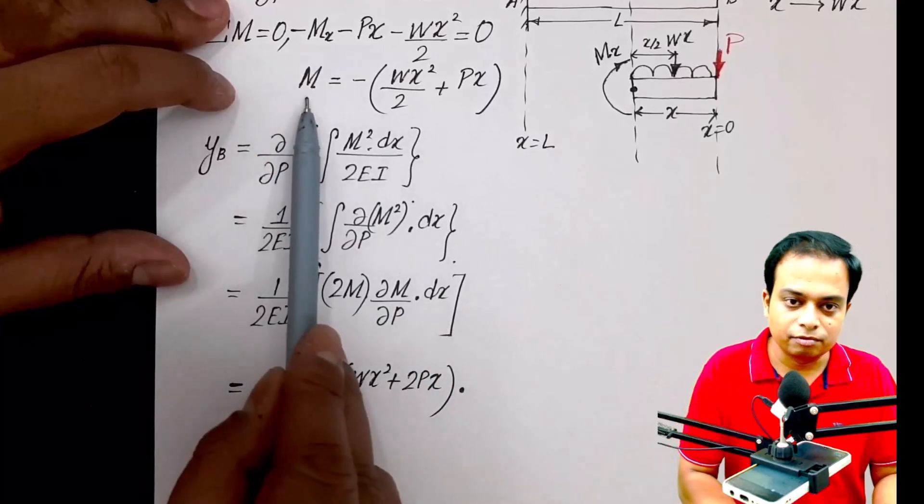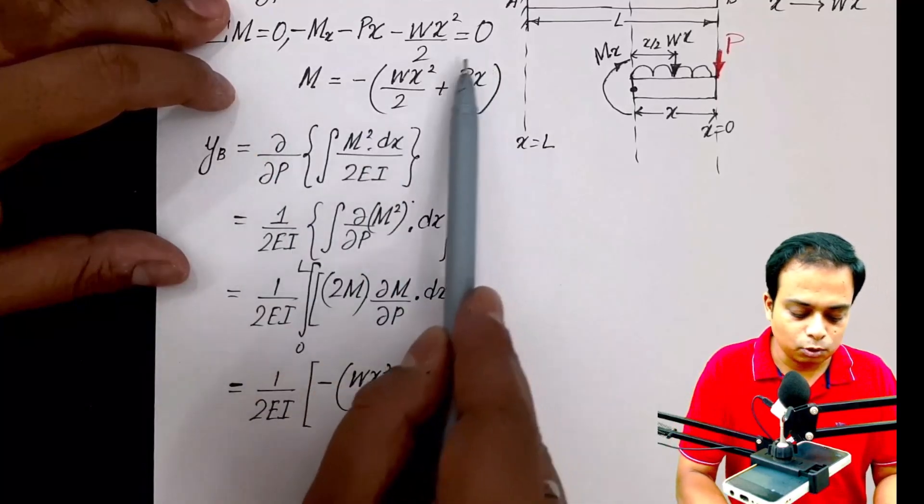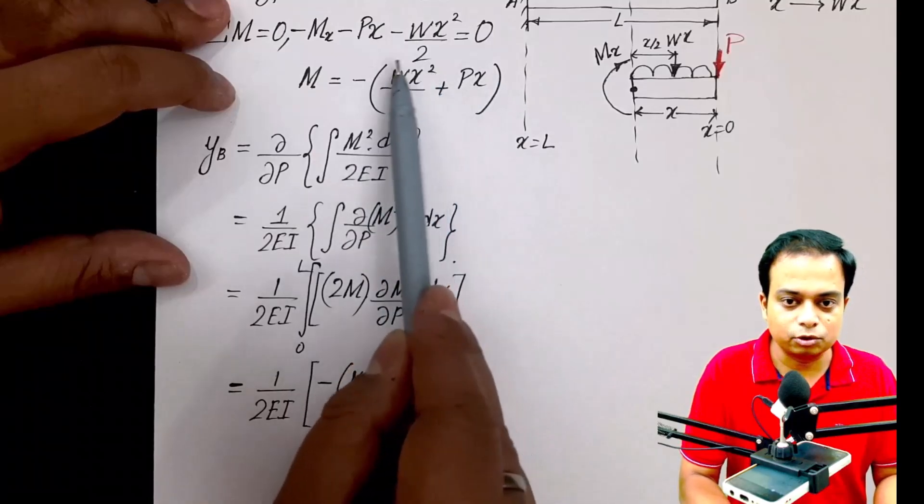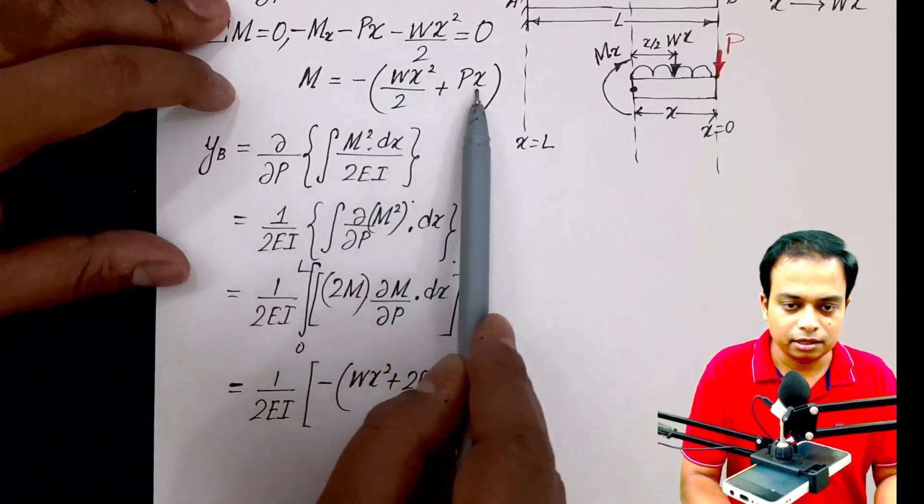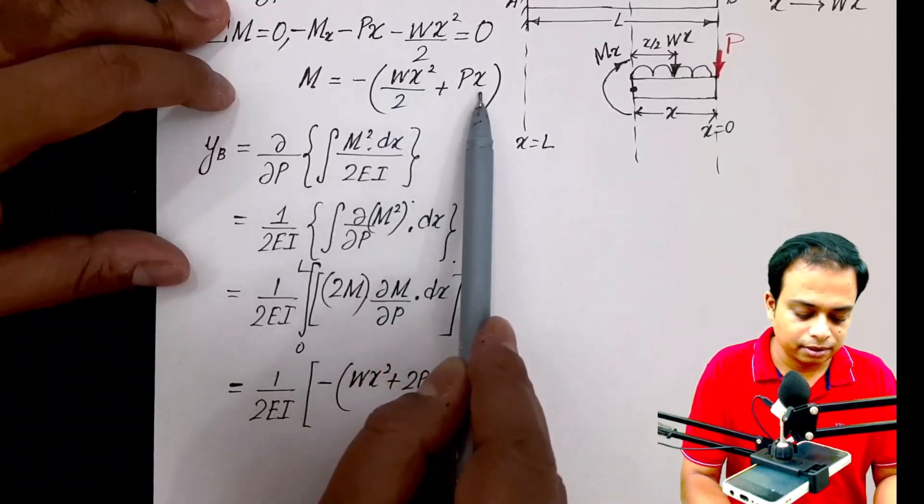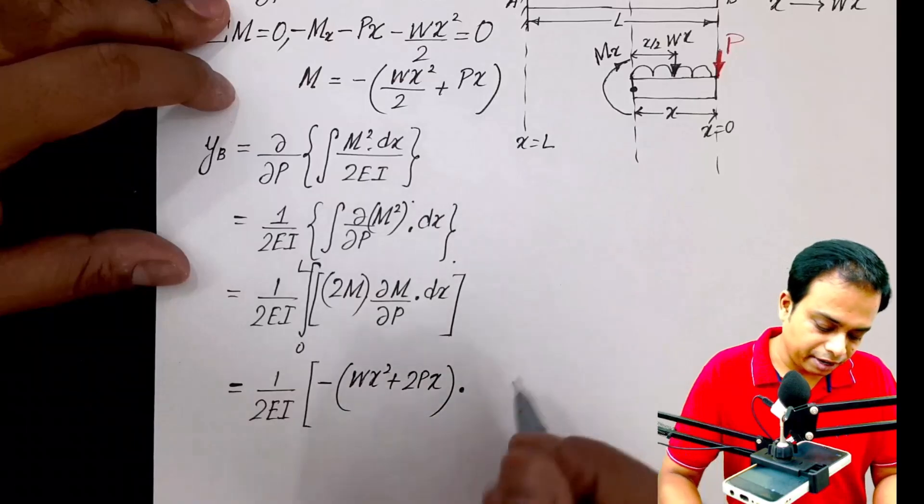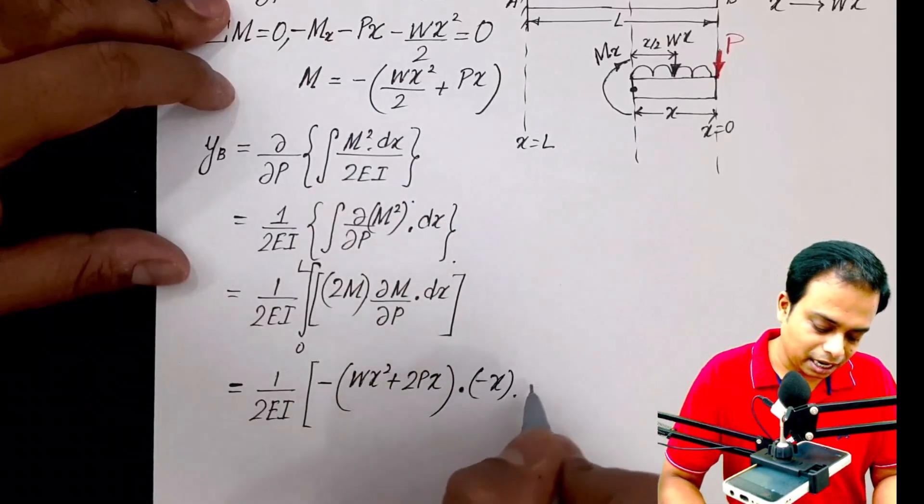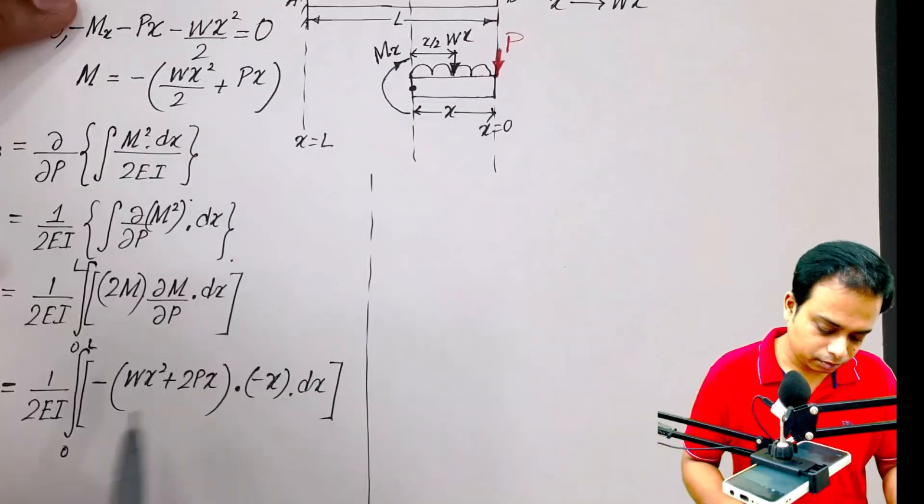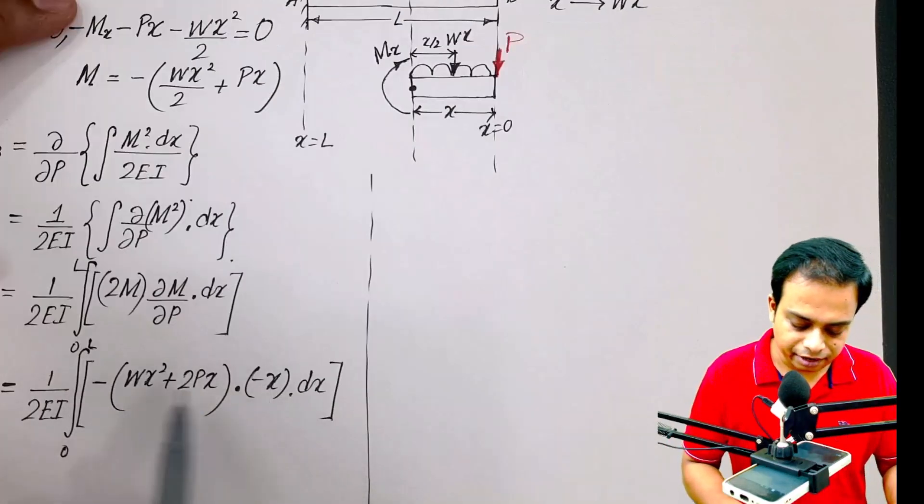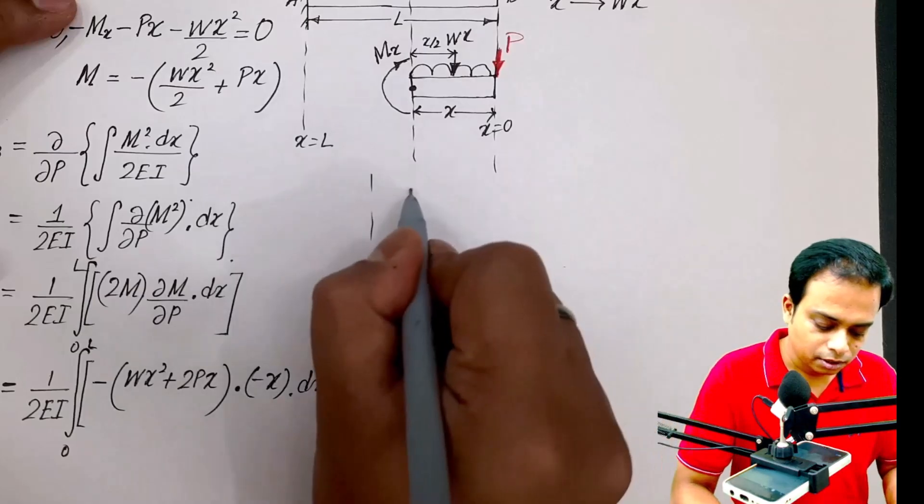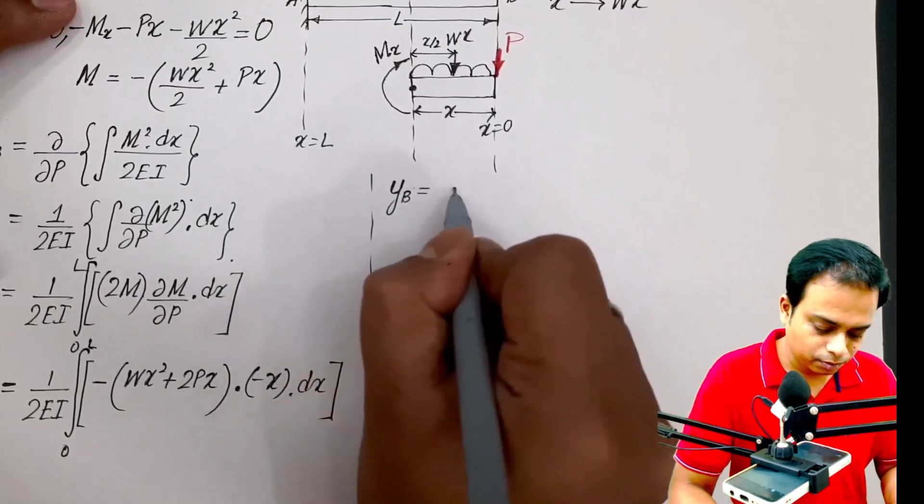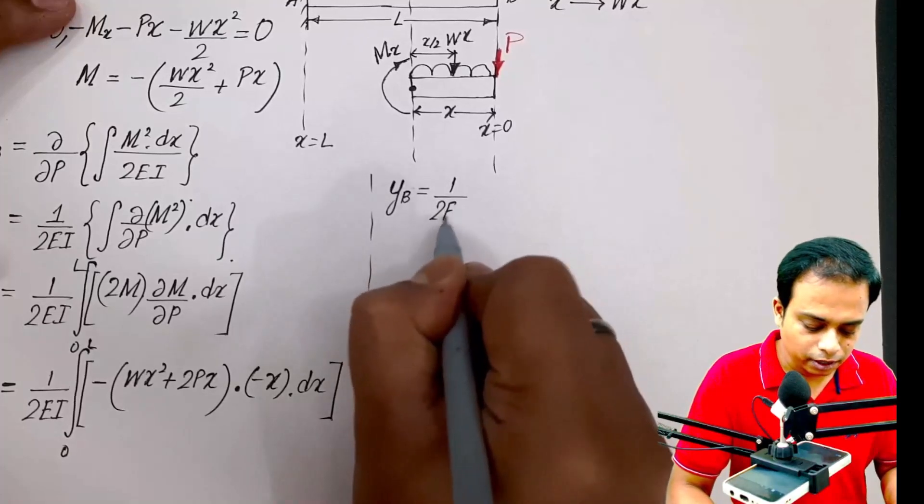Multiplied by, again there is a multiplication sign, what is del m by del p? So you have to differentiate this with respect to p. This portion will be differentiated: del p by del p will be 1 and x is left. And here there is no p term, so this will become 0. You just have an x term but with a negative sign. Please note: minus x times of dx. Take the x inside; negative negative will become positive.